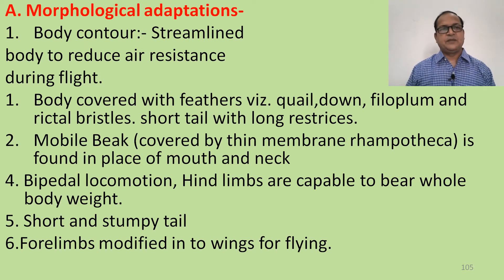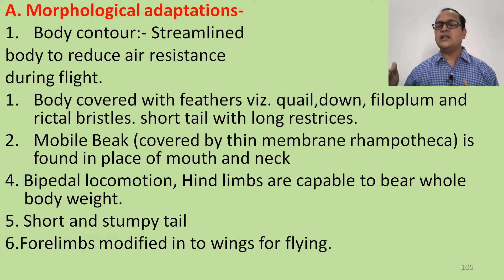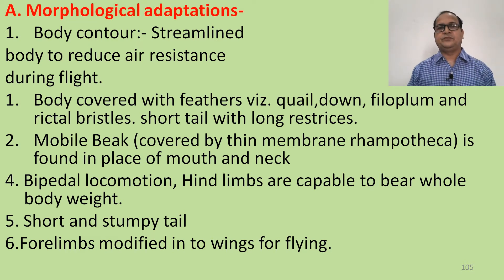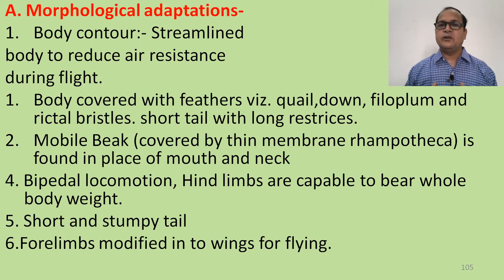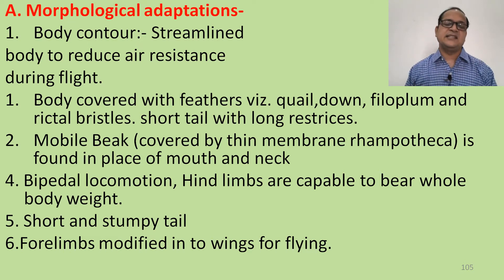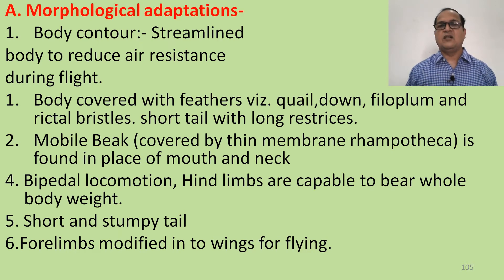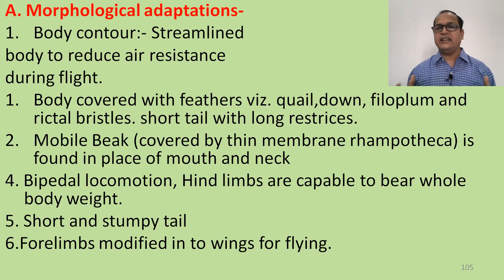Morphological adaptations: body contour is very important. A streamlined body reduces air resistance during flight. The body is covered with feathers of many types — quill feathers, down feathers, filoplume feathers, and rectrices or tail feathers.